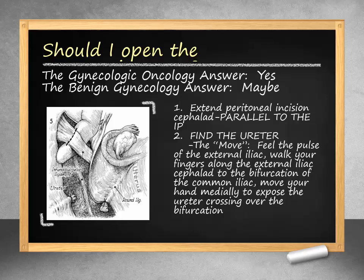Next, we find the ureter, which is located on the medial leaf of the broad ligament. This can be accomplished by identifying the external iliac artery and gently walking your fingers along the artery in a cephalad direction until you reach the bifurcation. Once at the bifurcation, moving your hand medially will expose the ureter as it crosses the pelvic rim.